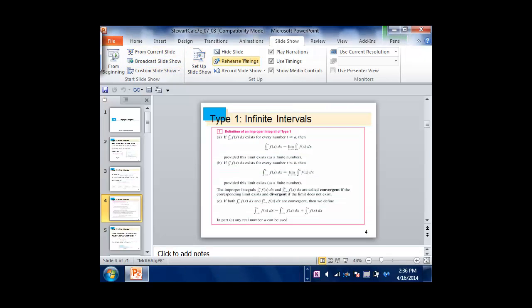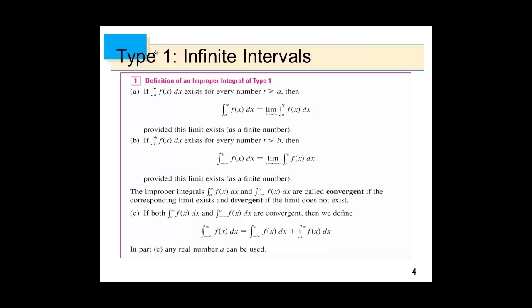The integral from -∞ to +∞ of f(x) dx equals the integral from -∞ to a plus the integral from a to +∞, provided both exist. An improper integral is convergent when the limits exist, and divergent when they do not.